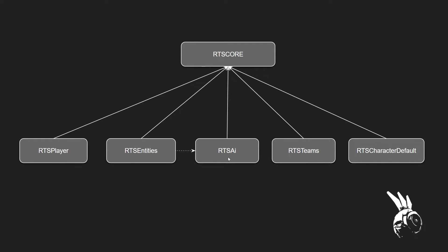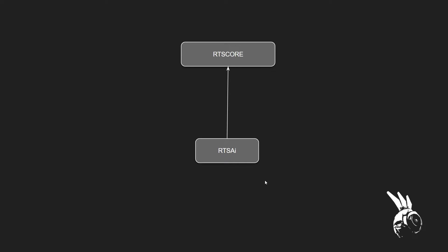That one-way dependency means if we're working on another project and just want the RTS AI tools — things like blackboard tasks, AI tasks, EQS queries — basically a toolbox of AI tools, we can still use RTS AI on its own because it has no dependency back to Entities. So you can just use core and RTS AI in another project and have access to all those AI tools. Similarly, if you want teams functionality, you just drop in RTS Teams and away it goes.